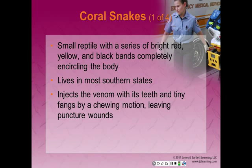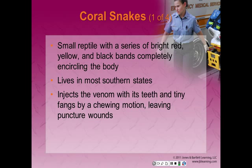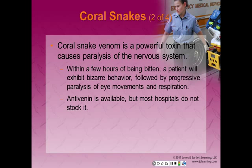Coral snakes are small reptiles with a series of bright red, yellow, and black bands that completely encircle their body. The common saying: red on yellow will kill a fellow, red on black venom will lack. A relative of the cobra, it lives in most southern states and in the southwest. It injects venom with tiny fangs by a chewing motion — because of its small mouth, limited jaw expansion, and tiny fangs, the coral snake usually bites on a small part of the body such as the finger or toe. Coral snake venom is a powerful toxin that causes paralysis of the nervous system.